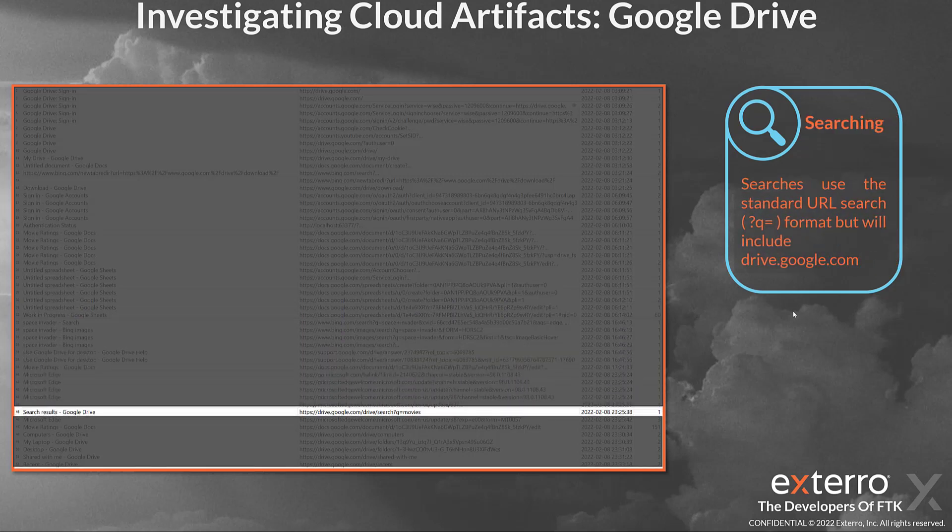Searching in Google Drive uses the standard URL search format with the question mark Q equals. The only thing you'd be looking for is drive.google.com in the URL, indicating that they were searching within their drive. It'll show up in your preset filters and built-in tool stuff that shows searches because of the question mark Q equals — nothing out of the ordinary with searches.